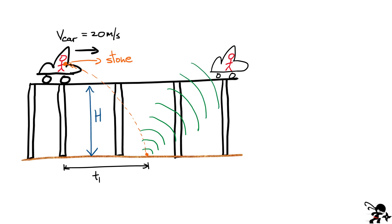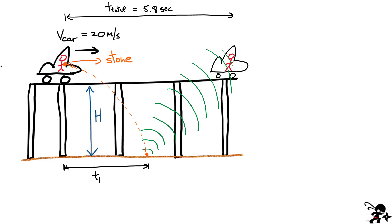Then it hits the ground and makes a sound, and that sound propagates in all directions. I'm going to focus on the sound going toward the guy, and eventually it reaches his ear. From the initial point of the drop to when he hears it, I'll call that the total time — that's 5.8 seconds. The time from when it hits the ground to when it reaches his ear, I'll call T2. The speed of sound is 340 meters per second, and the car's speed is always 20 meters per second — even when the sound propagates, he's still moving to the right.